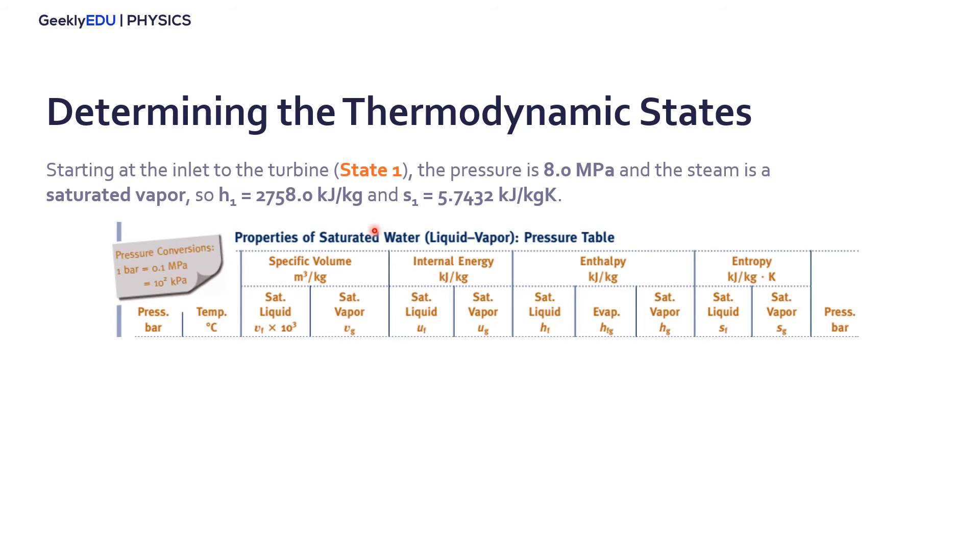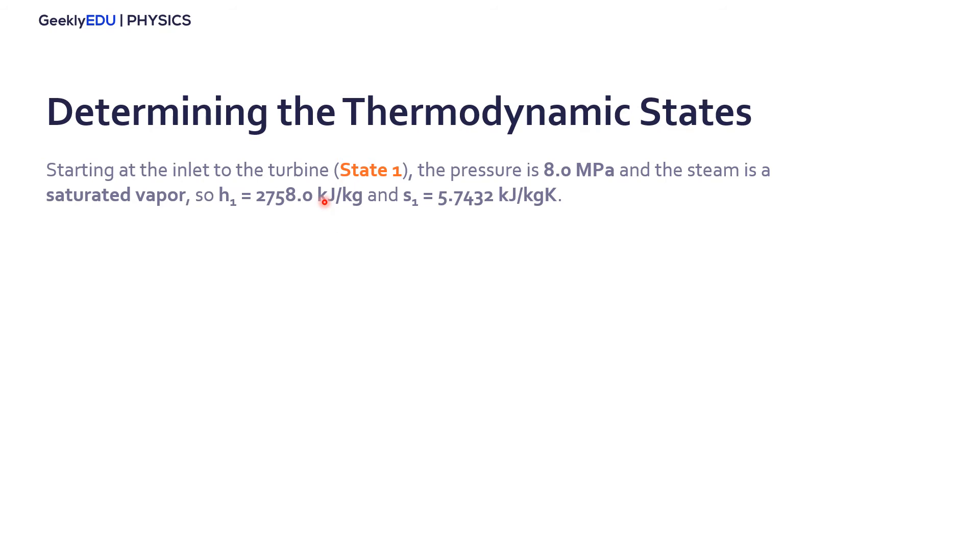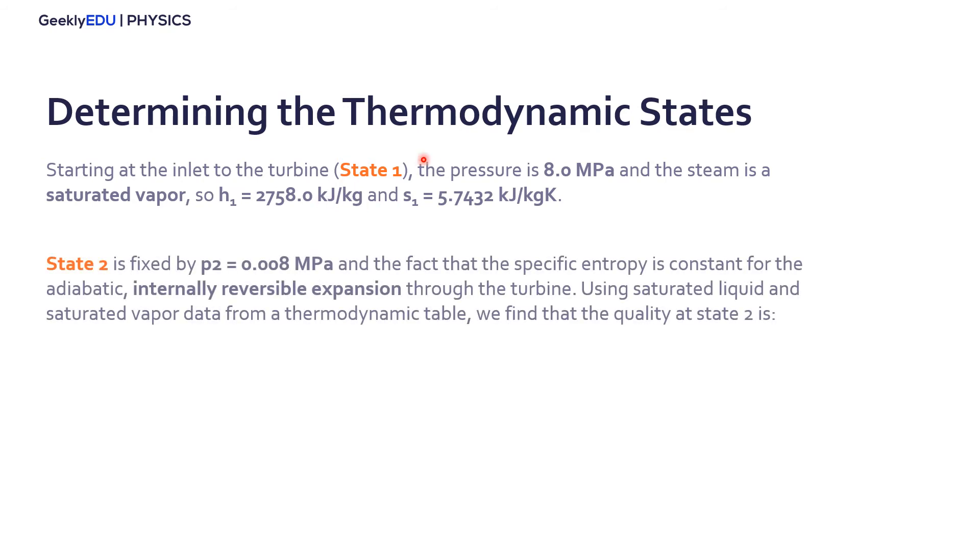The tables look like this. So we have some of the properties here for saturated water, have the specific volume, internal energy, entropy, and it's related to the pressure and temperature. So from these tables here, we get these values. So we have now state number one.